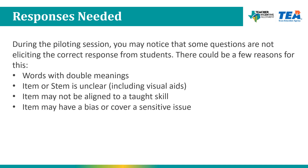During the piloting session, you may notice that some questions are not eliciting the correct response from students. There could be a few reasons: words with double meanings (like 'bark' — does it mean bark on a tree or the bark of a dog?), an unclear item stem or visual aids (was the text too small, was the visual aid unclear?), an item not aligned to a taught skill (were students expected to multiply and divide fractions while only being taught to add and subtract?), or an item with bias or a sensitive issue. Clarity is key to having a valid and reliable assessment system.